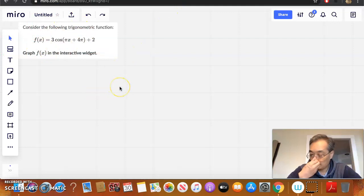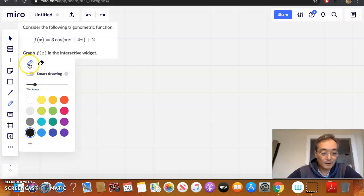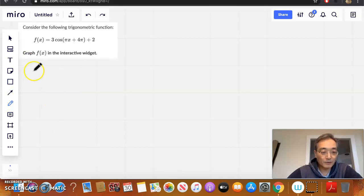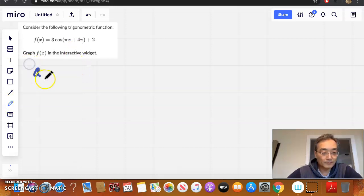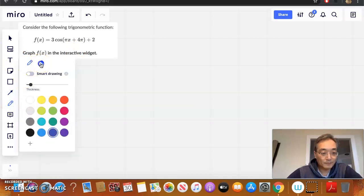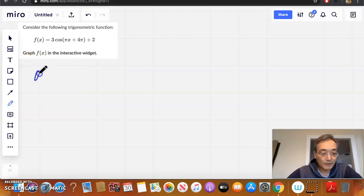So now, how do we graph this? Well, we definitely have to employ what we've already learned, which is, of course, we have to find a few things first, right? So we have to find the amplitude. So we definitely have to find the amplitude.